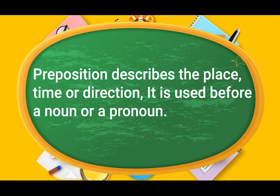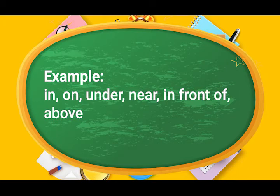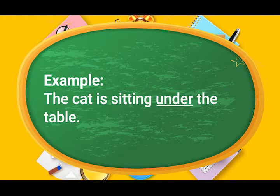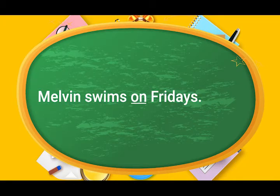Prepositions. Prepositions describe the place, time or direction. It is used before a noun or a pronoun. For example: in, on, under, near, in front of, above. Let's see some example sentences. The cat is sitting under the table — here, the preposition 'under' shows where the cat is sitting. Melvin swims on Fridays — here, the preposition 'on' indicates when an event happens.